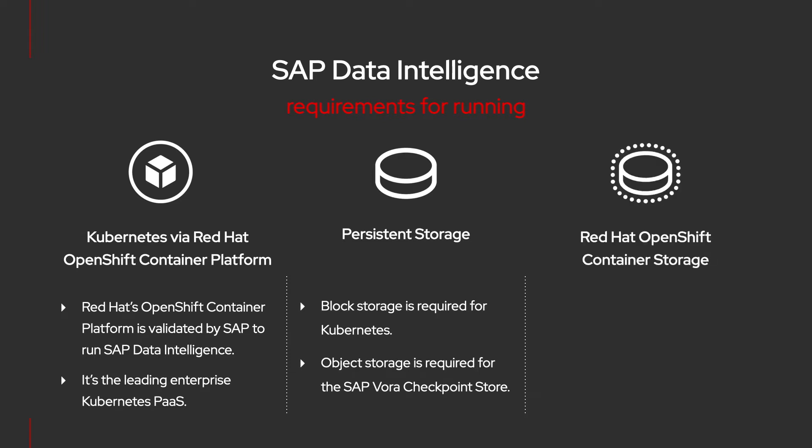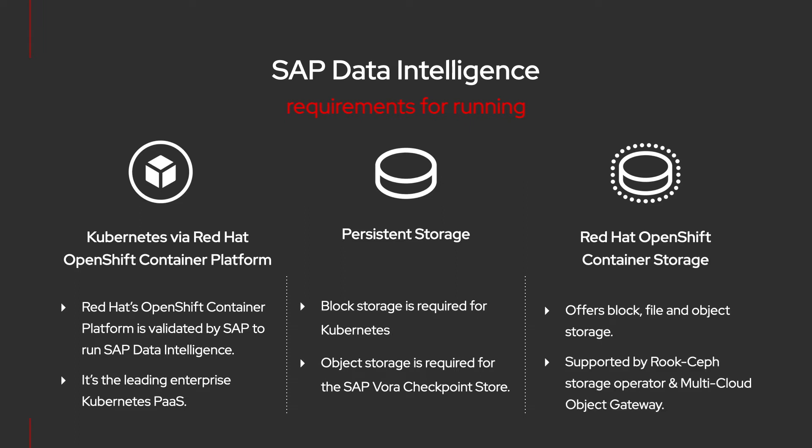Red Hat's OpenShift container storage offers block, file, and object storage. It's supported in OpenShift by the RUC-CEF storage operator and multi-cloud object gateway. All infrastructure services run in file or block, and object storage can be used via RGW, or the RADOS gateway.